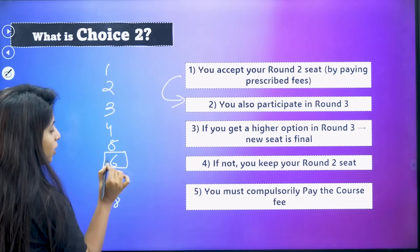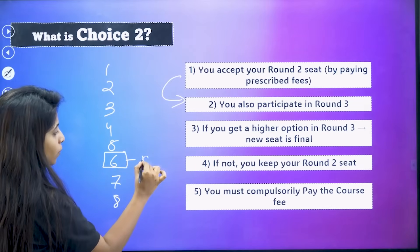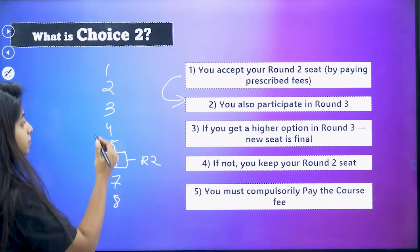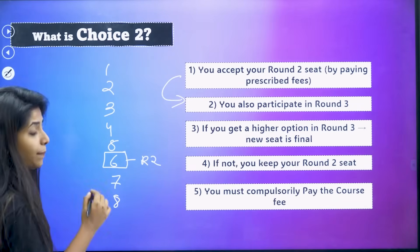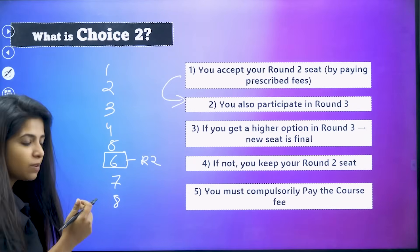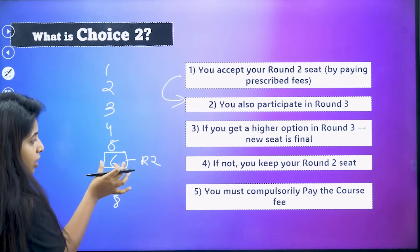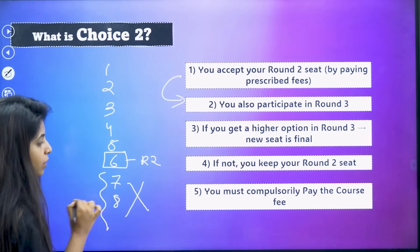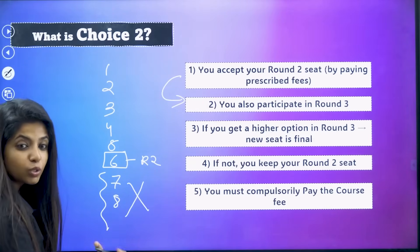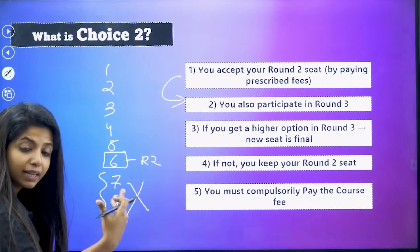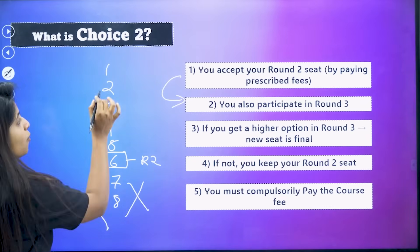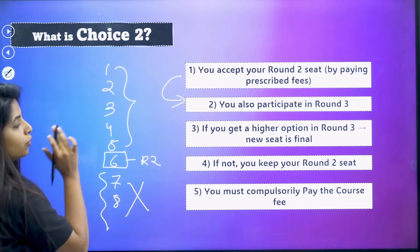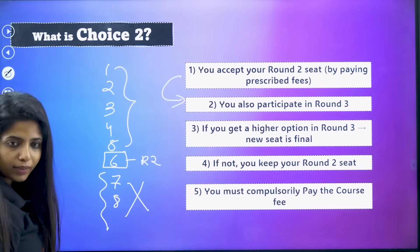For example, suppose you have eight colleges and you got the sixth college in round two. Then you went for an upgrade. Whenever you go for an upgrade, always remember — suppose you got a college, all the other lower options will be gone. All the lower options will be automatically deleted. So you will be left with colleges one to five.